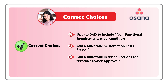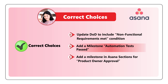Choice D: Update DOD — which stands for definition of done — to include non-functional requirements met condition. Choice G: Add a milestone — automation tests passed. And Choice E: Add a milestone in Asana sections for product owner approval.